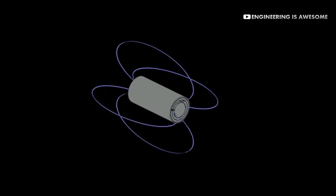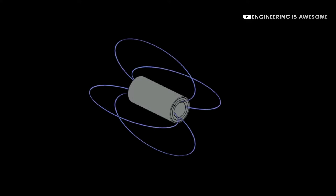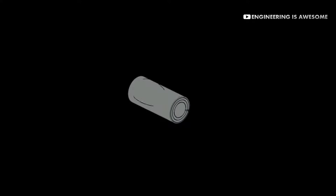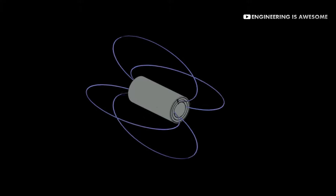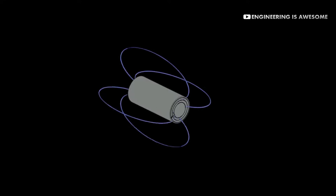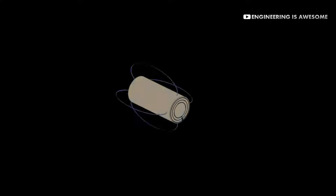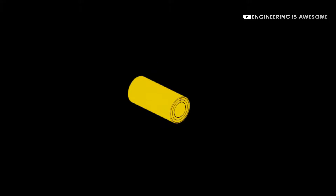The natural tendency of these eddy currents is to flow in circular loops within the metal itself, and as they flow against the resistance of the material, they will generate heat due to Joule's heating. This in turn heats up the metal.